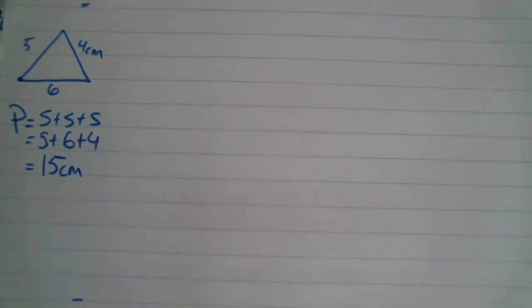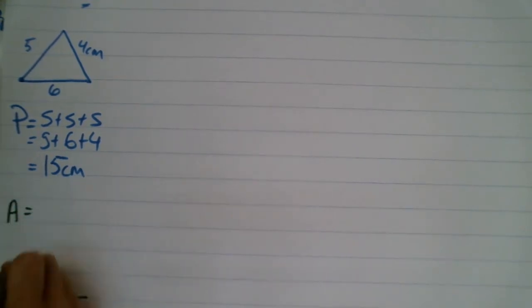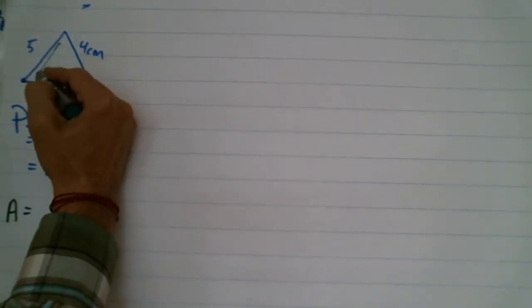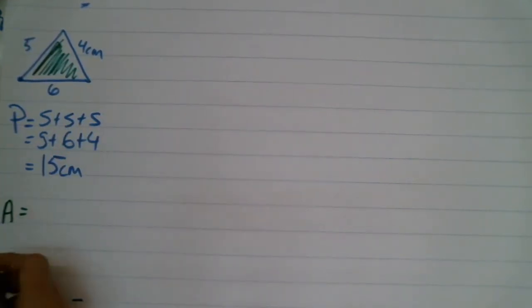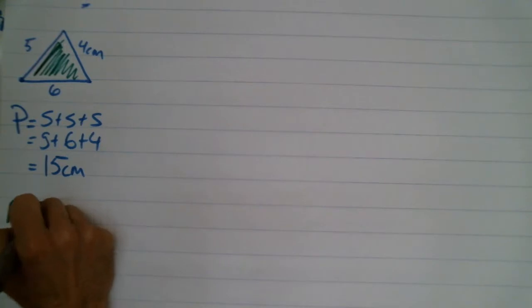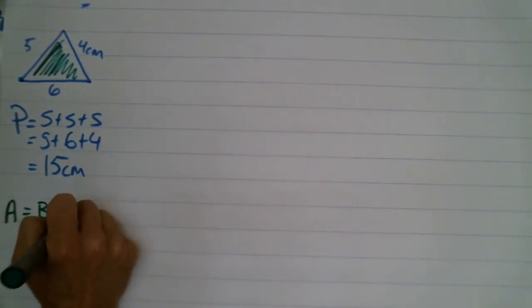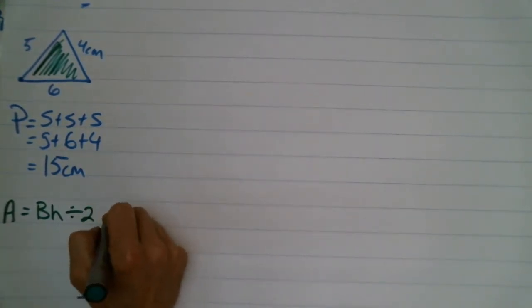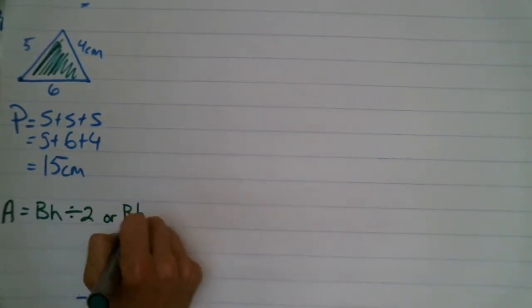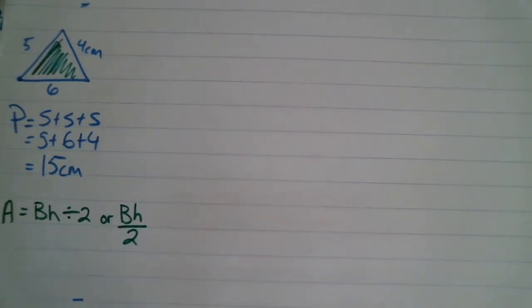The one that seems to be really tricky for students is the area. Because now we're dealing with something different. Remember, the area is how much space is on the inside. So for the area of a triangle, we're going to go base times height divided by 2. The other way to write this is BH divided by 2.